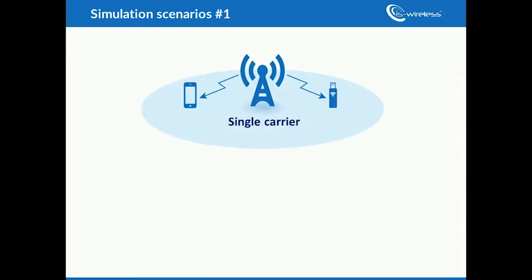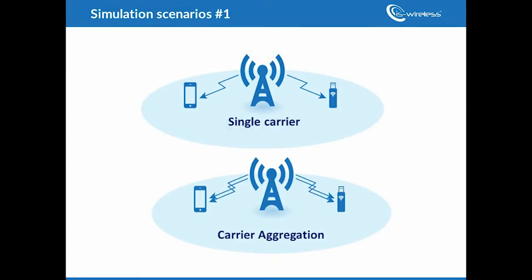LTE MacLab can be used to simulate various simulation scenarios. As an example, we depict the basic case which corresponds to a 3GPP Release 8 with a single carrier environment. LTE MacLab also allows you to simulate networks compliant with 3GPP Release 10. Using carrier aggregation, it is possible to combine carriers and extend bandwidth. Release 10 introduced aggregation of 2 carriers in specific bands, but our tool gives you more freedom — it allows you to aggregate up to 5 component carriers and extend bandwidth to 100 MHz in any bands.